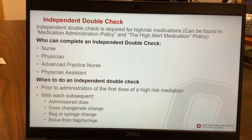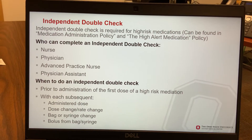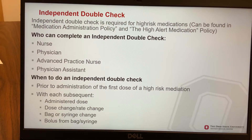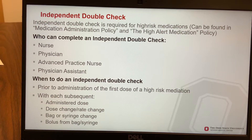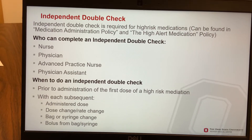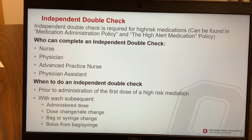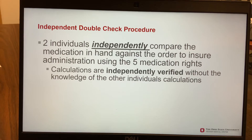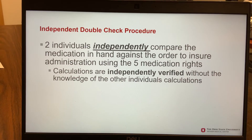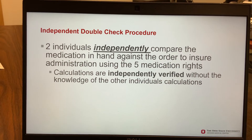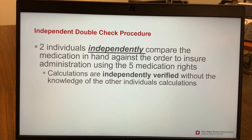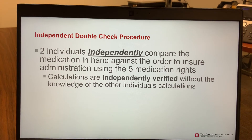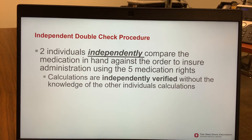We should do an independent double check prior to the administration of the first dose of a high-risk medication and with each subsequent administered dose, dose rate change, bag or syringe change, and a bolus from a bag or syringe. The independent double check should be two individuals independently comparing the medication in hand against the order using the five medication administration rights. Calculations for rate dose changes should be done independently without influencing the other person's calculations.